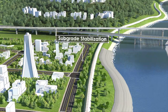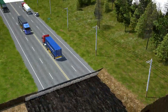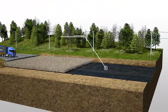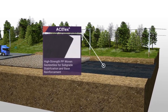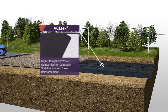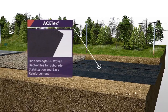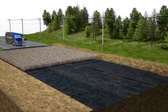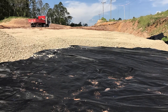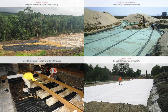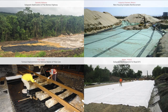Subgrade Stabilization: ACE-TEX geotextile laying between the subbase and the subgrade will perform exceptionally well in separation and reinforcement functions at the same time for pavement stabilization. With the excellent filtration characteristics and tensile strength of ACE-TEX, the bearing capacity and service life of the road can be greatly improved.